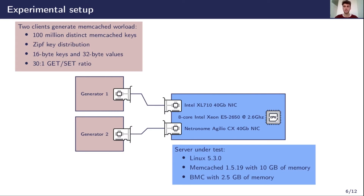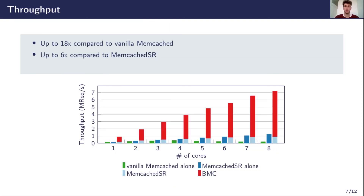To evaluate BMC, we use three machines equipped with 40-gigabit network cards. The server runs Memcached and BMC, and the other two run clients to generate traffic. The workload parameters represent BMC's target workload based on patterns observed in Memcached deployments at Facebook, and are also those commonly used in Memcached literature. We first evaluate the throughput of the server under three configurations: vanilla Memcached alone, Memcached SR alone, and Memcached SR with BMC. We observed that using BMC improves throughput up to 18 times compared to vanilla Memcached and up to 6 times compared to Memcached SR alone.